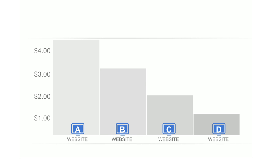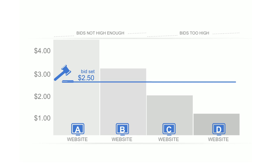So in our example, if the advertiser could only set one bid, it would want to bid somewhere in the middle — let's say the average, $2.50, across all sites. That means that sites A and B, who should have gotten bids of $4 and $3, are not getting as high of bids as they should be, while sites C and D are receiving bids that are too high. What smart pricing does is allow our system to auto-adjust the advertiser's bid across the sites according to the likelihood the click will deliver actionable business results.